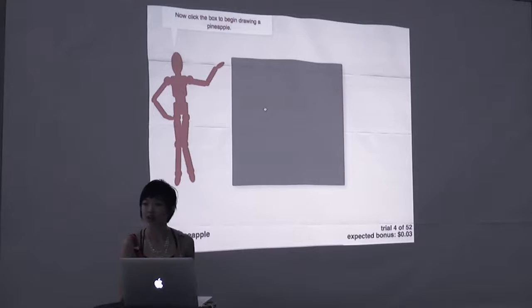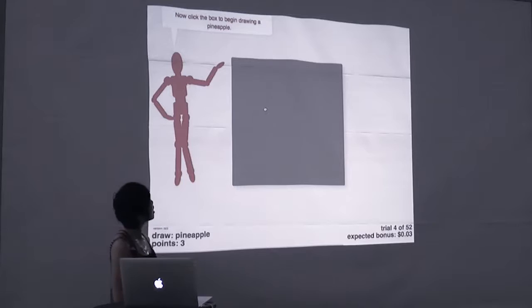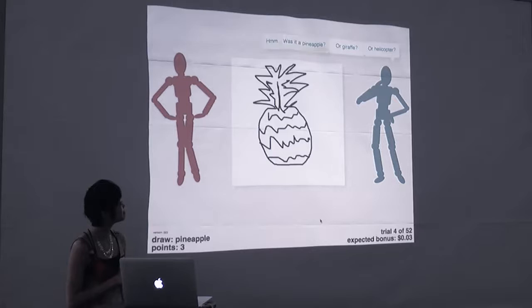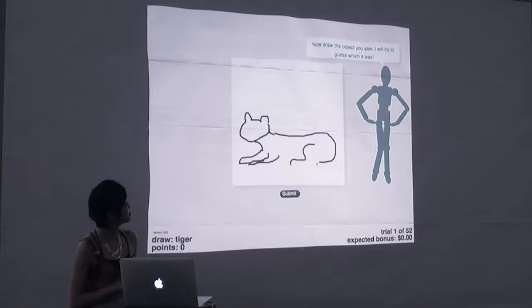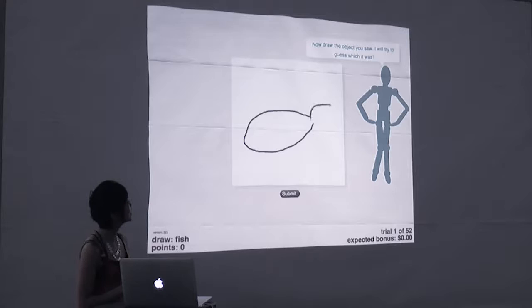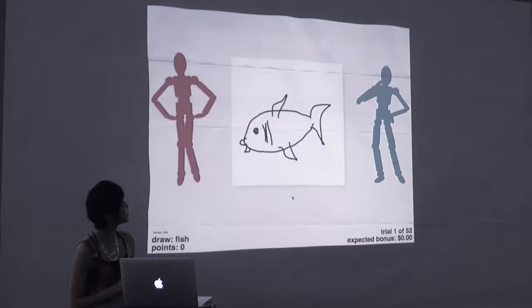I'm going to show you a demo video of three drawing trials from the perspective of a participant, sped up about four times. Okay, so first up is pineapple. I missed that one. You can see the kinds of errors that it's making. I'm going to show you a little fish. Close. Okay, so this is the sort of flavor of what participants would experience in performing this task.